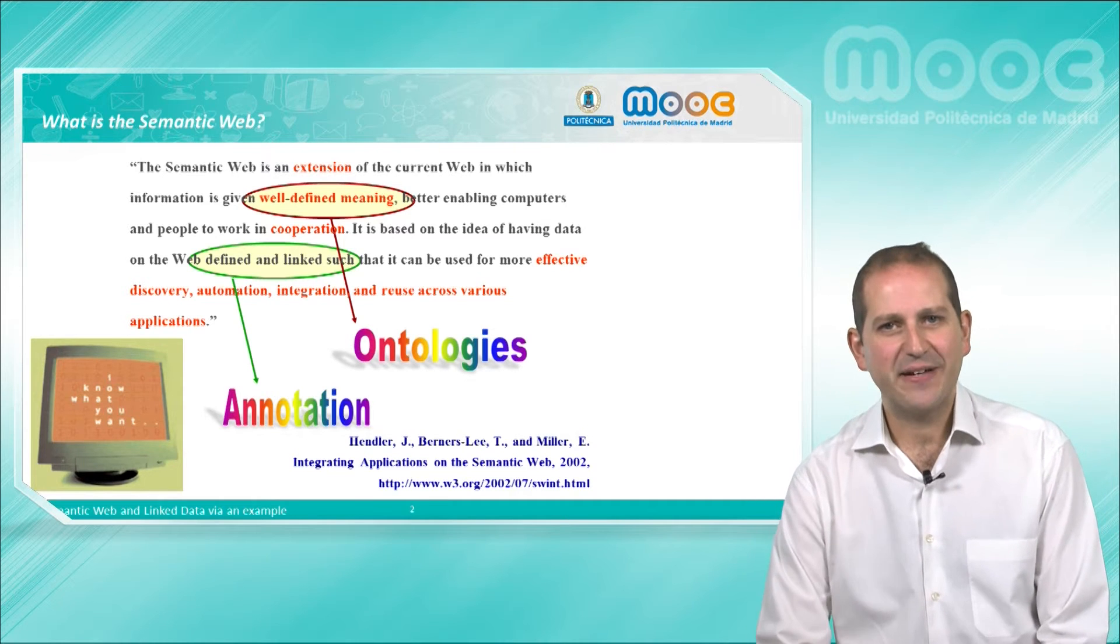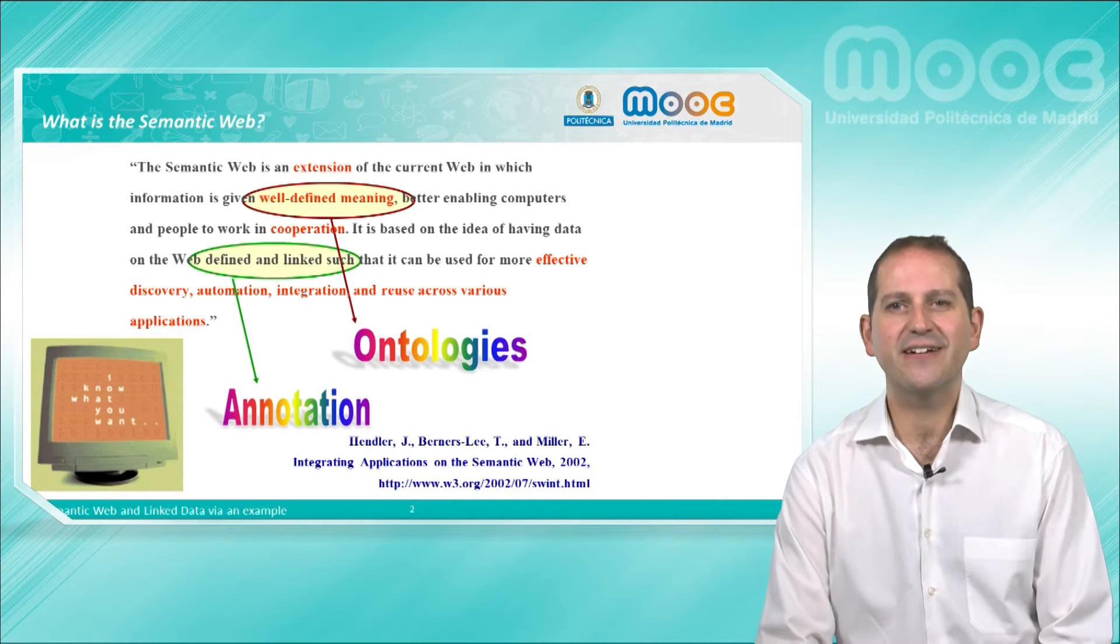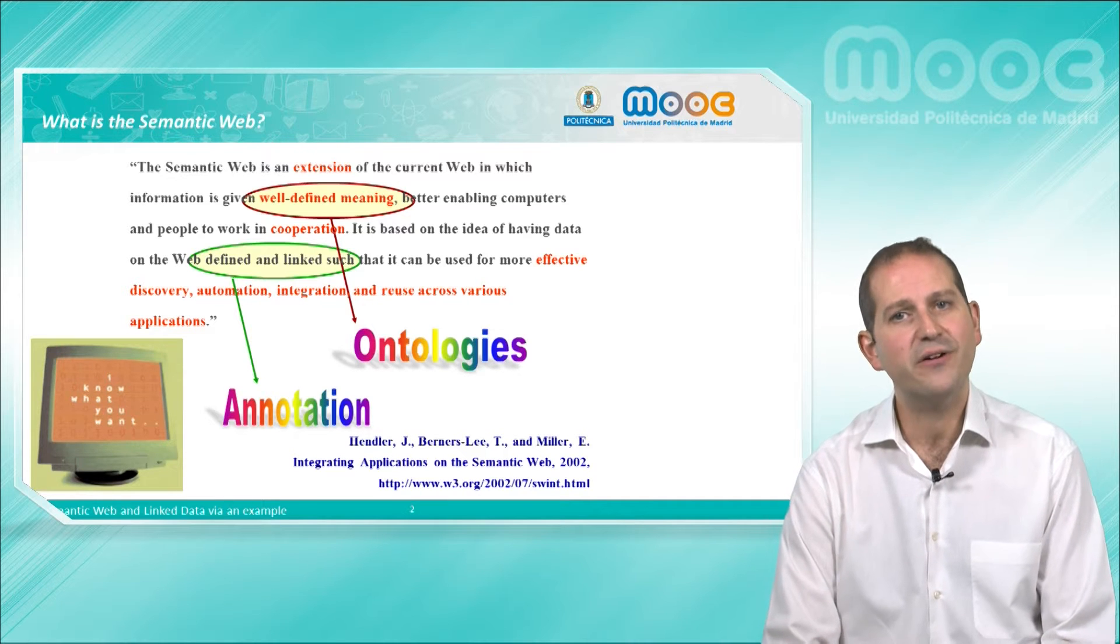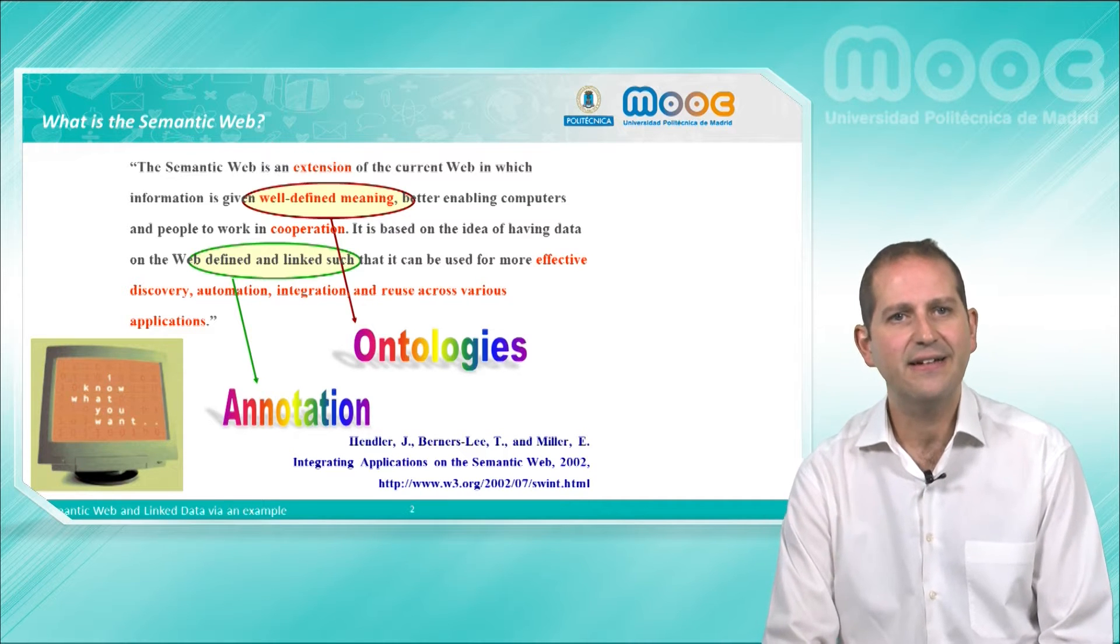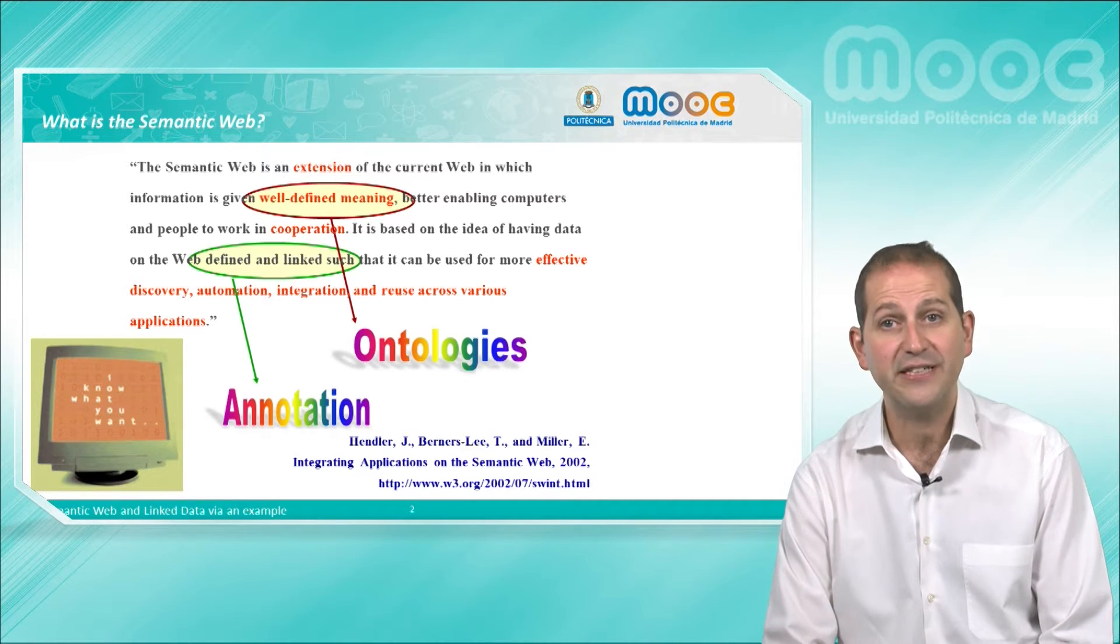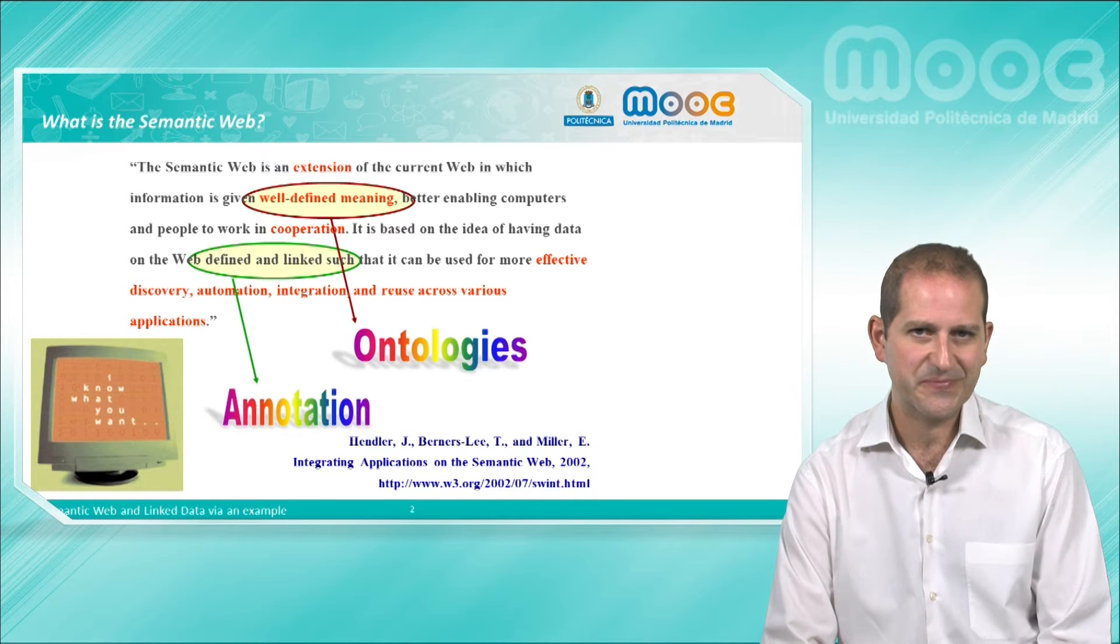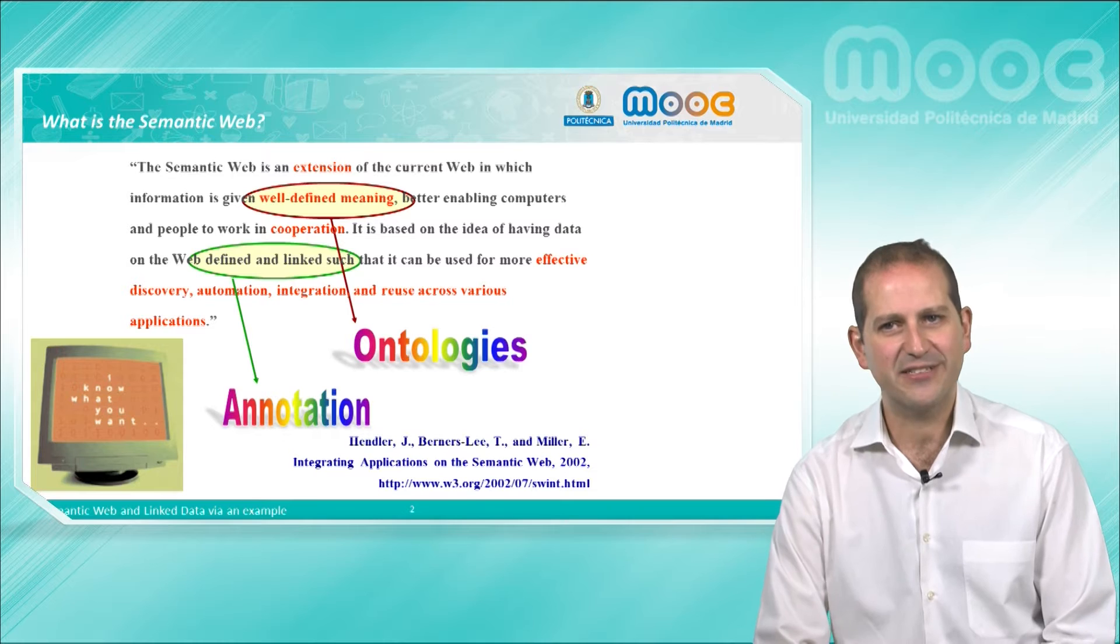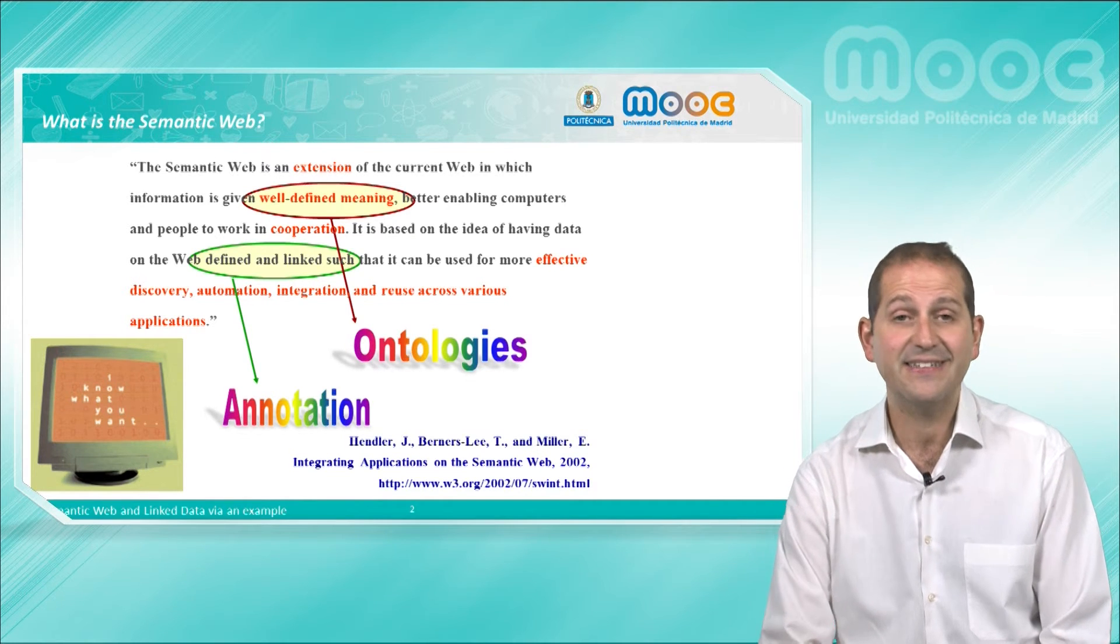Let's first start with the definition of Semantic Web, which dates back to the early 2000s, where it was defined as an extension of the current Web where information has a well-defined meaning and where data on the Web is linked to enable a more effective discovery, automation, integration and reuse across applications. There are two main components that we can talk about when thinking about the Semantic Web, which appear implicitly in this definition.